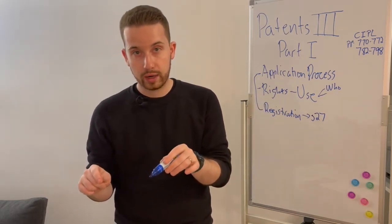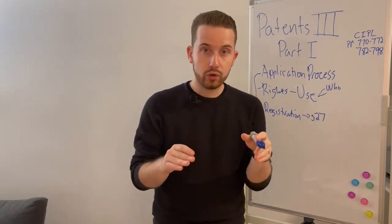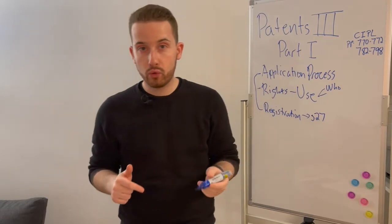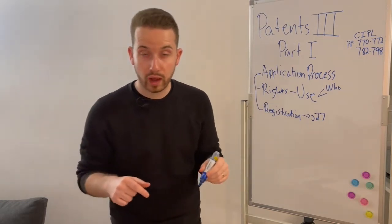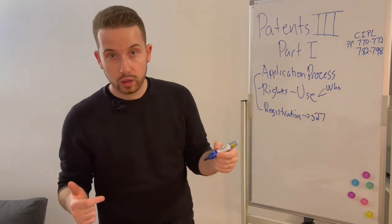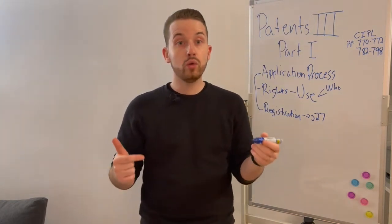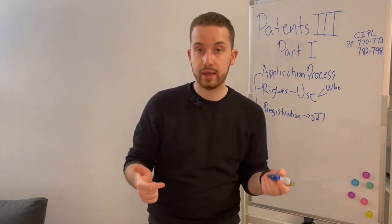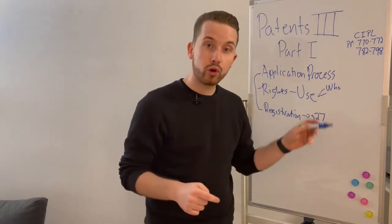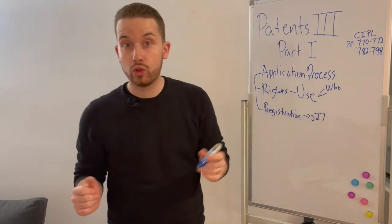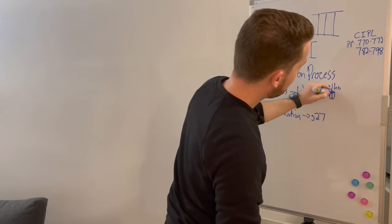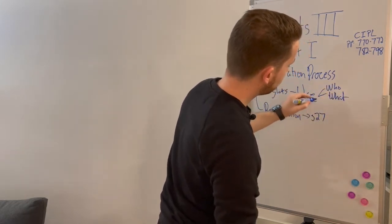Assignment can happen after you get the patent, but also before. You can assign your right to file the patent — a preemptive assignment — where you say: I'm selling you not my patent, because I don't have it yet, but my right to apply for one. That's allowed, and in that case the person making the application will not be the person who invented the invention.